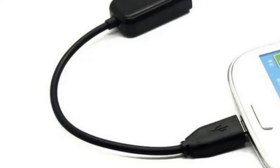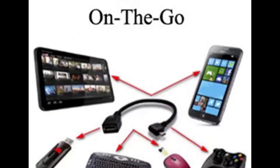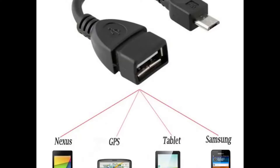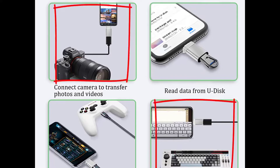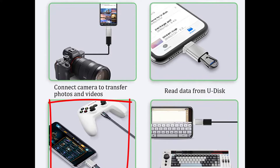Introduction about USB OTG. USB On-The-Go, or USB OTG, is a specification first used in late 2001 that allows USB devices such as tablets or smartphones to act as a host, allowing other USB devices such as USB flash drives, digital cameras, mice, or keyboards to be attached to them. USB OTG allows those devices to switch back and forth between the roles of a host and a device. A mobile phone may read from removable media as the host but present itself as a USB mass storage device when connected to a host computer.